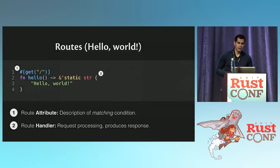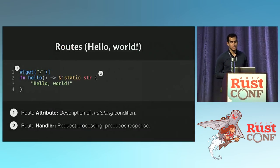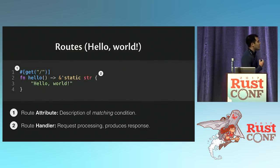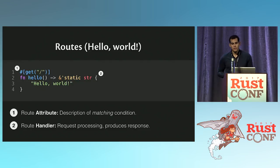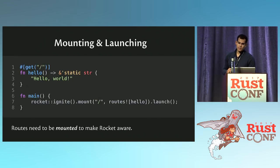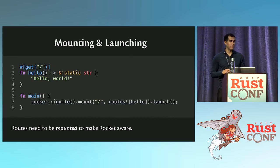If you were to actually run this thing and go to the root path, you'd see Hello World, as you would expect. That's really all it takes to write a Hello World application in Rocket. You do need a main function — so this is not the 100% complete application — and the main function looks like this.